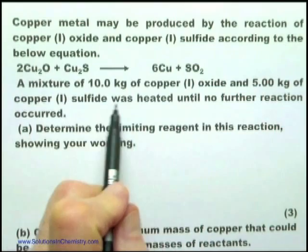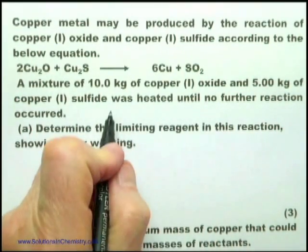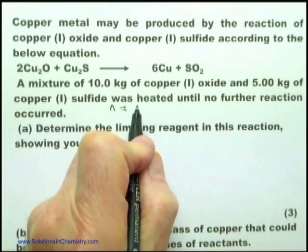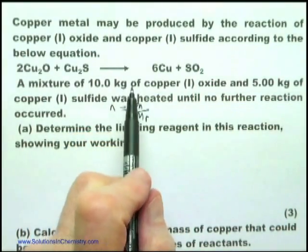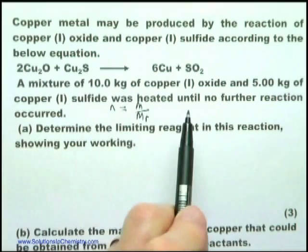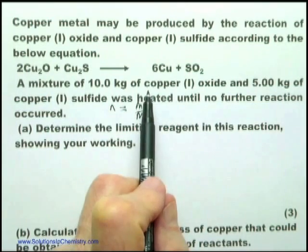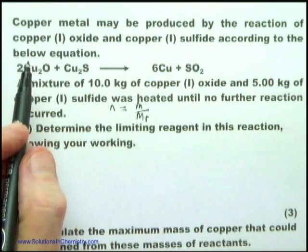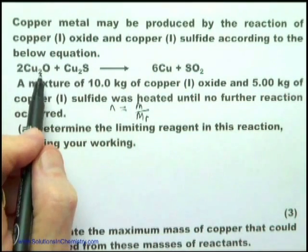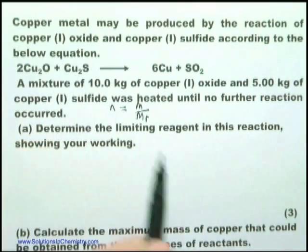We see a mass of material and the name of it, so we are going to use N equals M over MR. We notice there are two starting materials and we're given the mass of both, so we have to decide: is one of them in excess? We'll go through determining the number of moles of copper oxide and the number of moles of copper sulfide that they're mixing together.